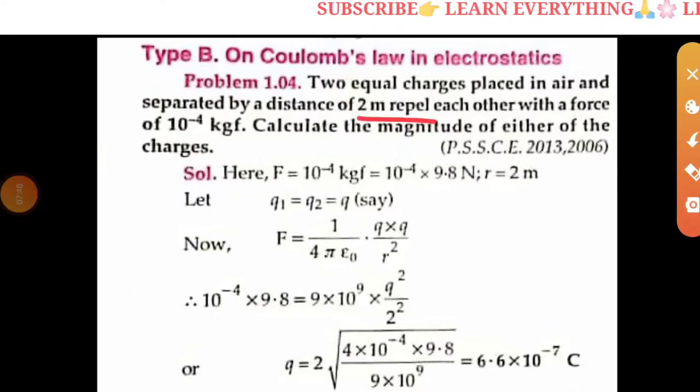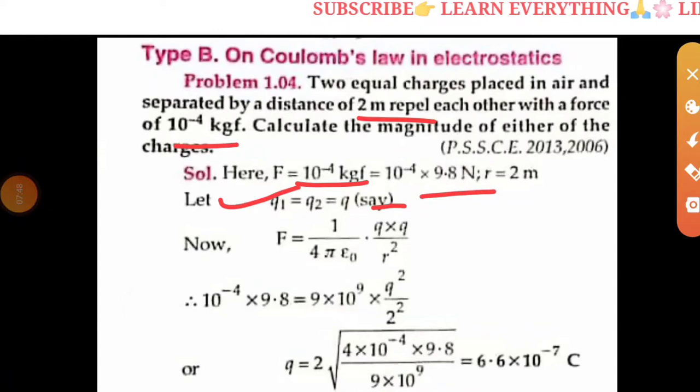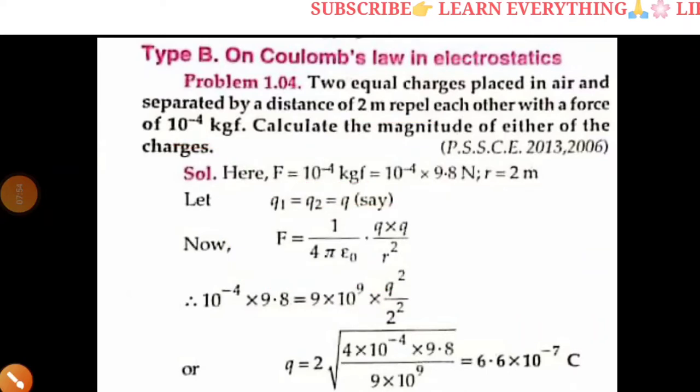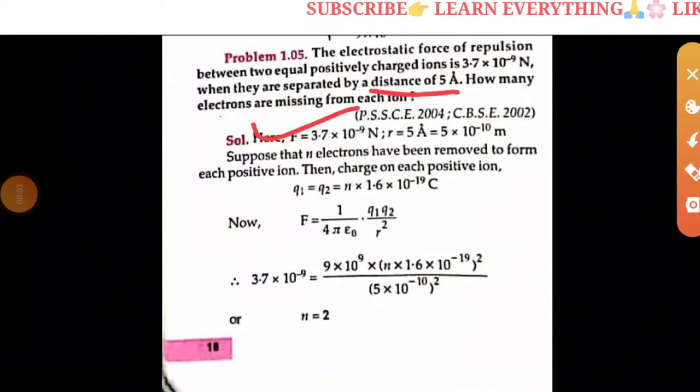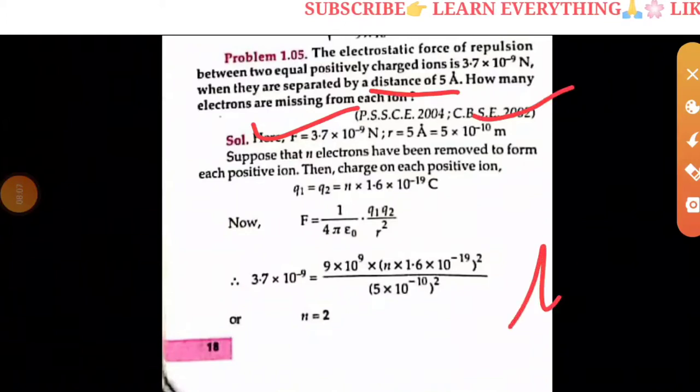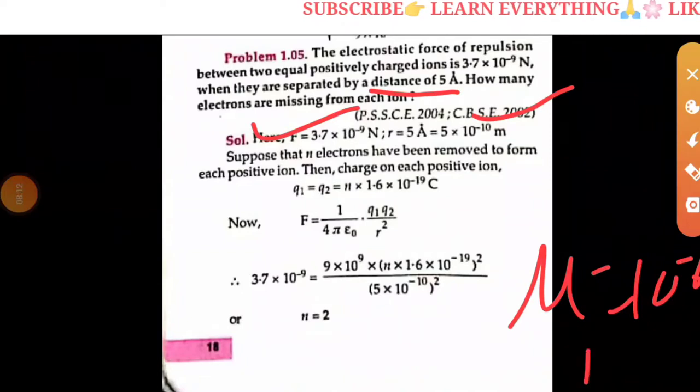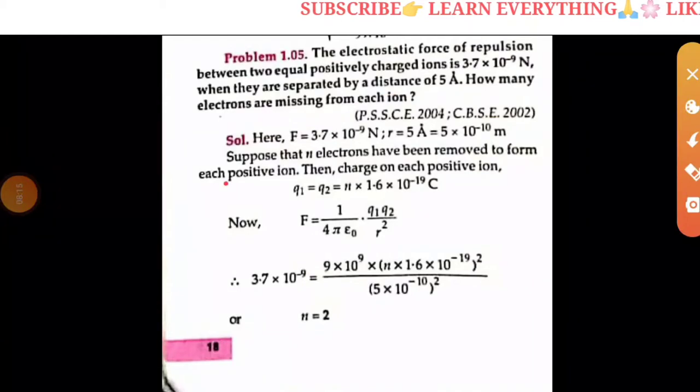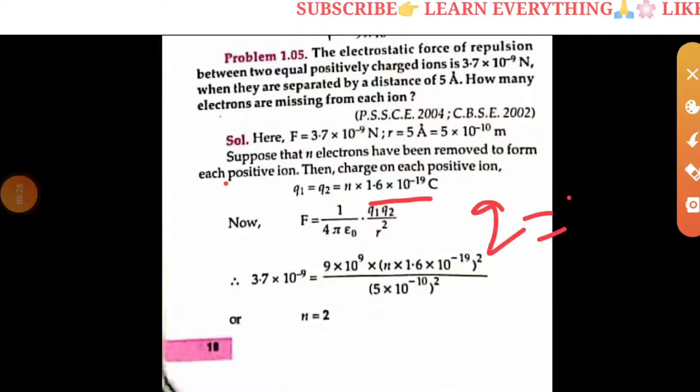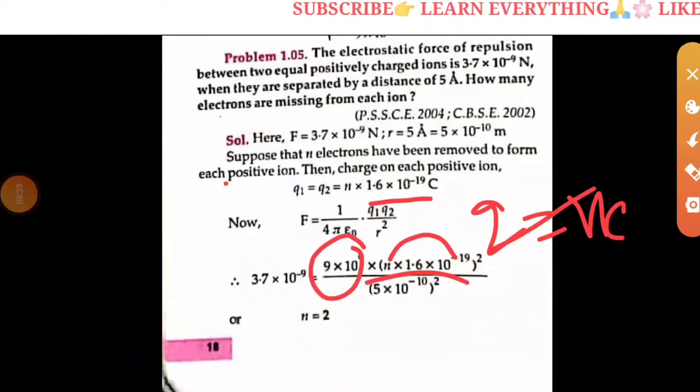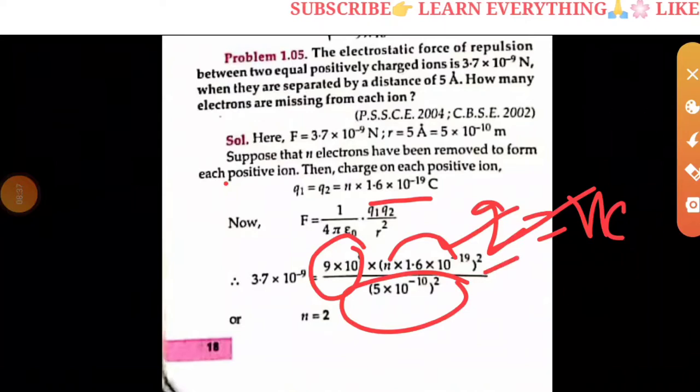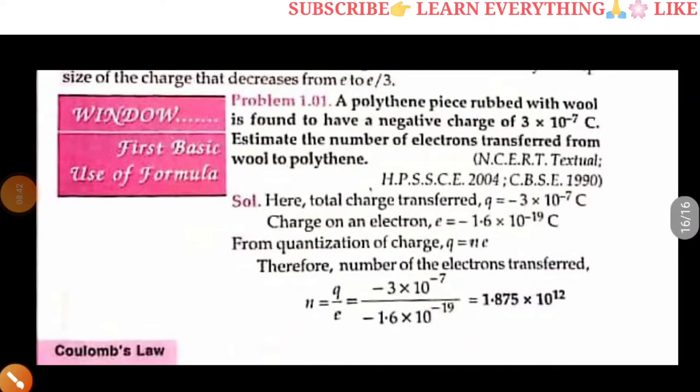Next: Two equal charges placed at a distance of 2 meters repel with a force. Calculate the magnitude of charge. The force is given in kilogram-force, convert to newtons by multiplying by 9.8. The electrostatic force of repulsion. Remember: 1 angstrom is 10 to the minus 10, micro is 10 to the minus 6, pico is 10 to the minus 12. How many electrons are missing? Use Q equals n times e to find the number of electrons.